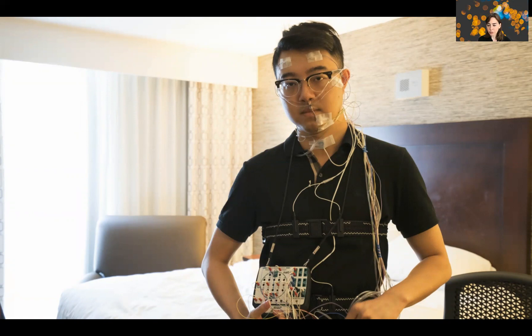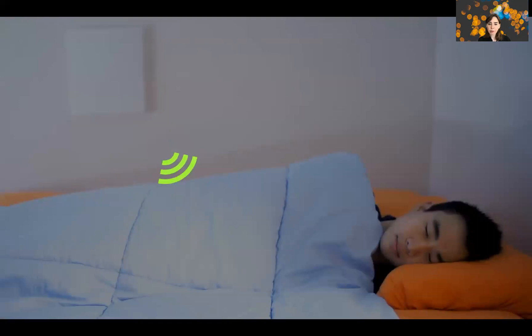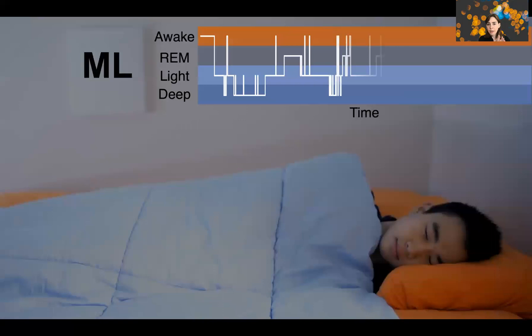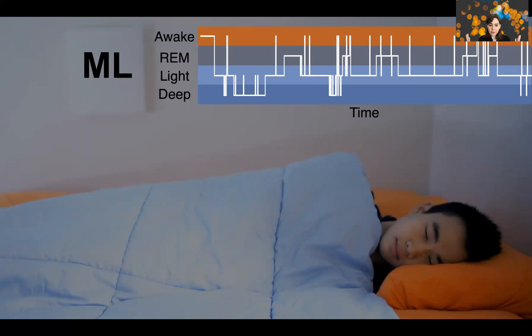With radio signals, you can get the same level of information — these sleep stages. Here's our device. We transmit very low-power wireless signals, analyze the reflection using specialized neural networks, and we can output the sleep stages throughout the night. The radio is away from the person. We don't ask the person to wear wearables or anything like that. There are no cameras, no electrodes on his head or body. And the accuracy is actually comparable to having those electrodes and having sleep technicians extract the sleep stages.